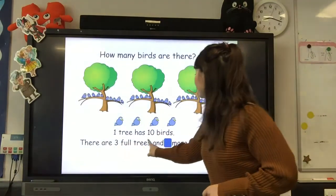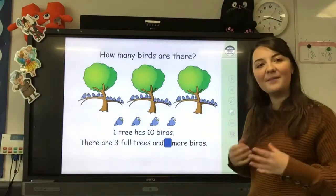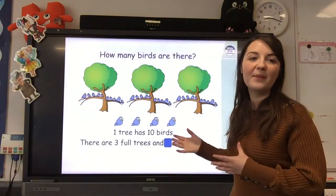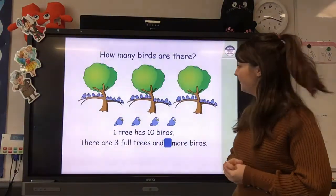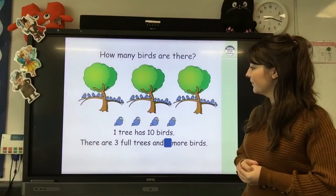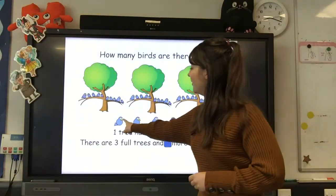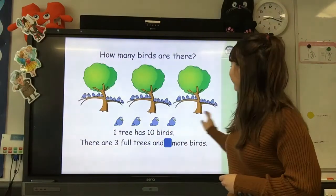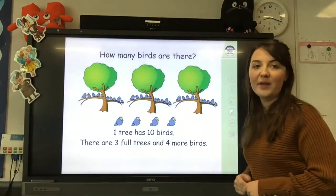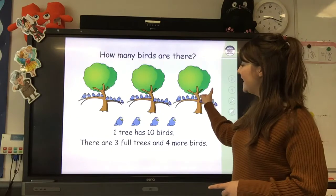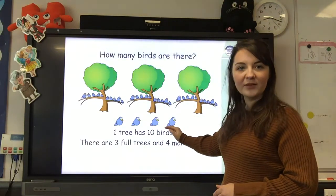3 tens. And how many ones do we have? How many birds are left on their own? 1, 2, 3, 4. There are 4 more birds. So we have 3 tens and 4 ones.